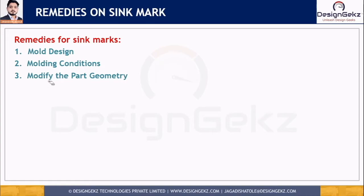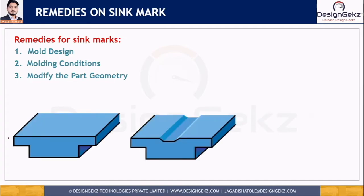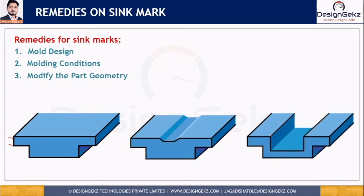The third way is modifying the part geometry. By adding features like ribs, corrugations, or fillets, we can eliminate the sink mark. We can also modify the part thickness to minimize thickness variation. If there is low thickness in one area and high thickness in another, we can maintain uniform thickness by removing the excess material — considering fillets to avoid sharp corners — or by removing material from the other side to maintain uniform thickness.